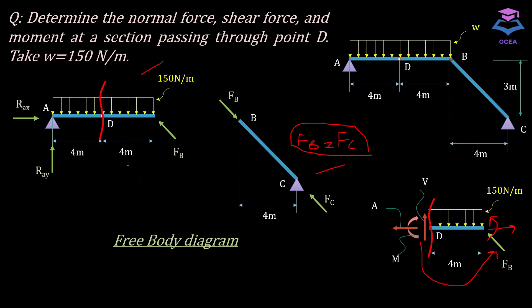Taking the member AB free body diagram and applying moment at point A: we have a known force and an unknown force FB at a distance from point A, so it produces a moment. Solving that equation gives us the value of FB. So using the AB free body diagram will give us the value of FB.